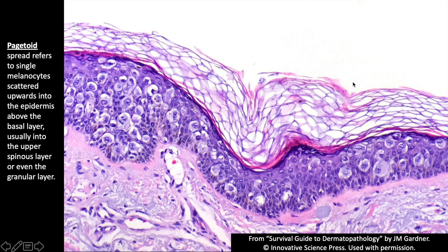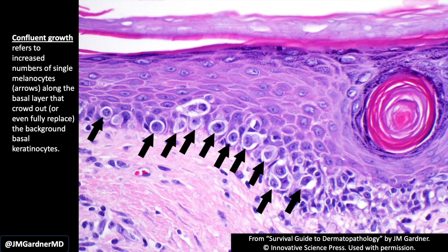If I see atypical melanocytes in the epidermis and a bunch of solar elastosis in the dermis, I'm going to consider that potentially melanoma until I find another explanation. You can see an atypical nevus in old sun-damaged skin, but you have to be very careful — especially on the head and neck. If I see atypia in sun-damaged skin on the face or scalp of an older person, I am extremely cautious, because many of those lesions are going to be melanoma — probably most.